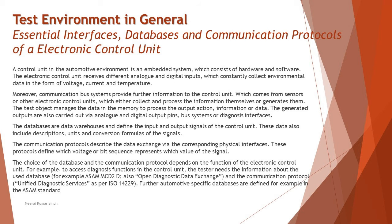The next part of this tutorial covers the essential interfaces, databases, and communication protocols of an ECU. A control unit in the automotive environment is an embedded system consisting of hardware and software. The ECU receives different analog and digital inputs, constantly collecting environmental data in the form of voltage, current, and temperature. Communication bus systems provide further information from sensors or other ECUs. The test object manages data in memory to process output action information, and generated outputs are carried out via analog and digital output pins, bus systems, or diagnostic interfaces.